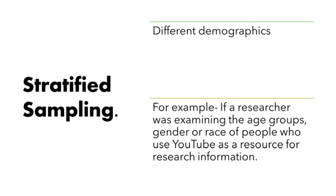Another type of sampling is stratified sampling. This is a little bit different because researchers use this type of sampling when they have different demographics within a population they want to capture. For example, if a researcher was examining different age groups, different genders, and different races among people who use YouTube as a research resource, then an age group would be classified as a stratum.